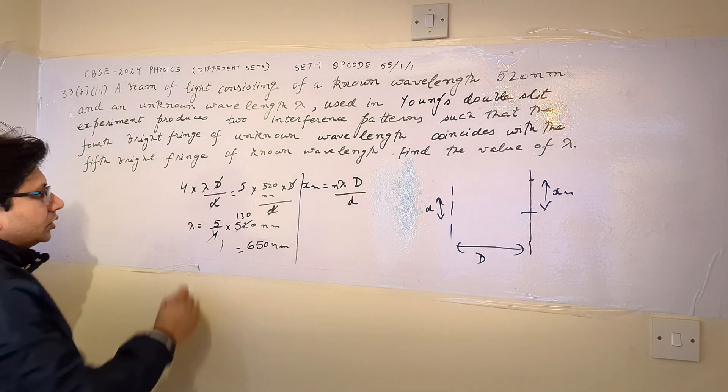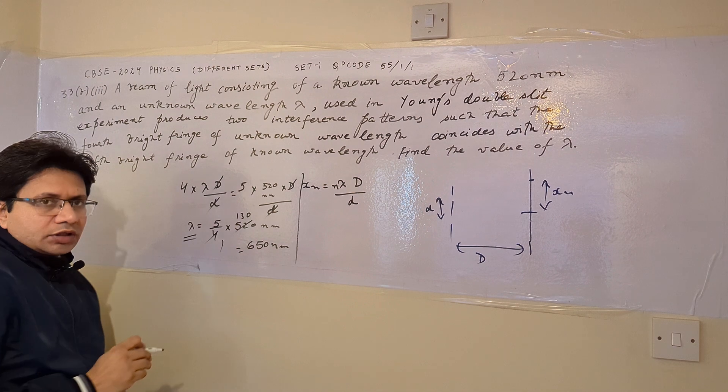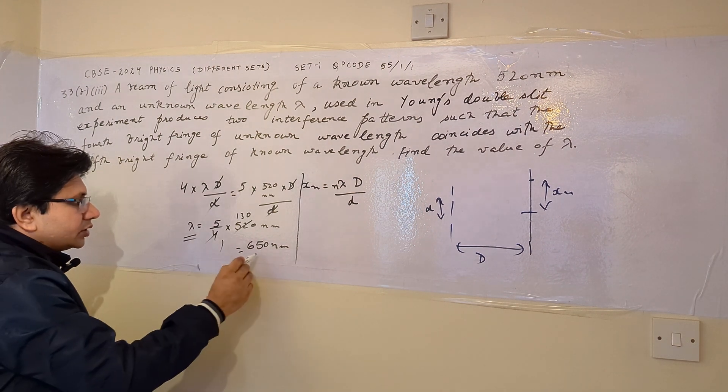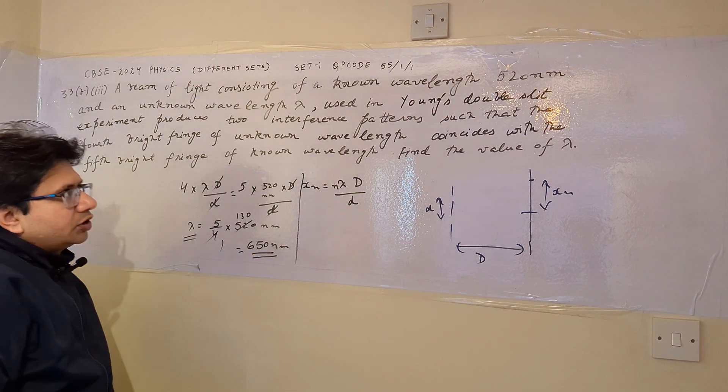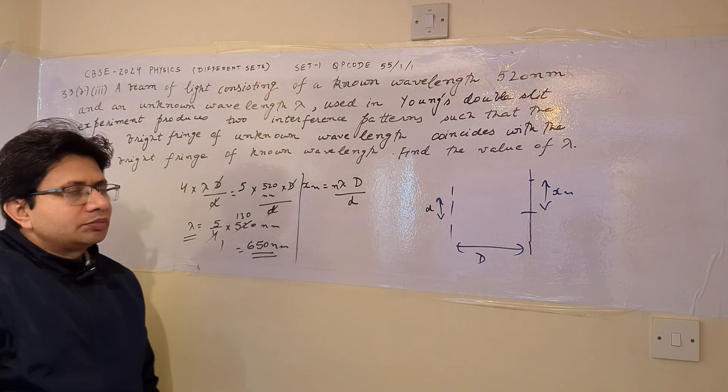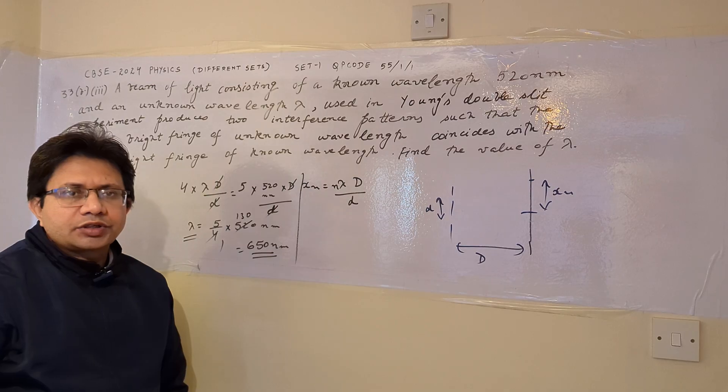So we can say that the wavelength of the unknown light is 650 nanometer. So this is the solution of this particular problem. Hope you understand the solution. Thank you.